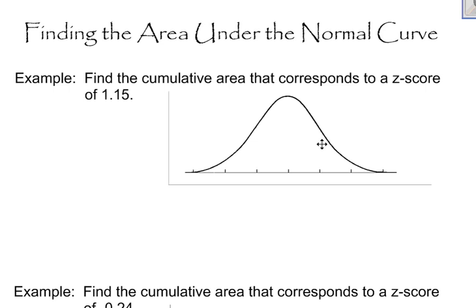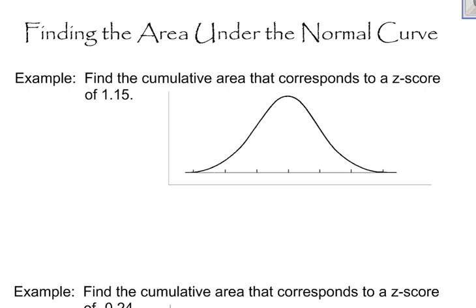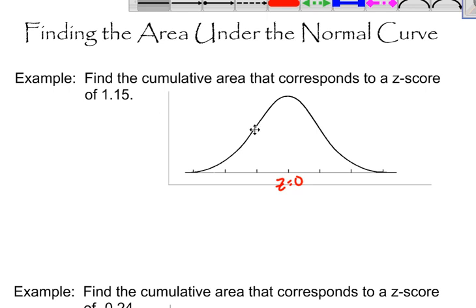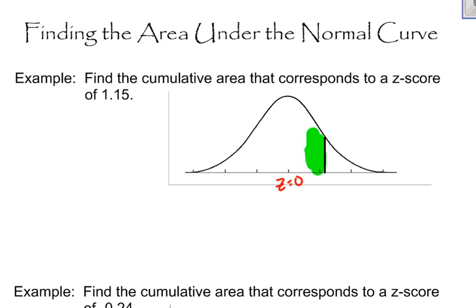Because when you draw a picture, it makes it so much easier to understand what is going on. So I'm going to put a z-score of 1.15 on this normal curve. I know that the z-score in the middle is always going to be zero, so I'm going to put a z-score of 1.15 right about here. The cumulative area tells me that I want the area that is below that z-score of 1.15, so I want this shaded area right here.